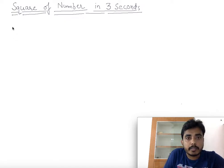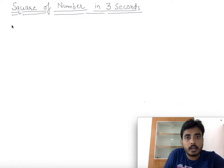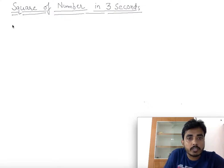Hello friends, I am Sumit Mehta. In this lecture we will see how to find the square of any number in three seconds. But for that there are some prerequisites — we should know the squares of numbers up to 25. So let's quickly see the squares of numbers till 25.